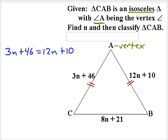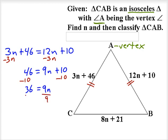So we'll go through and solve for n. I'll subtract 3n from both sides first, then I'll subtract 10 from both sides, and lastly dividing by 9 on both sides gives us a value of n. n is 4.